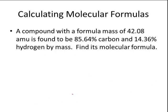Here's an example for calculating molecular formulas. A compound with a formula mass of 42.08 amu is found to be 85.64% carbon and 14.36% hydrogen by mass. Find its molecular formula. Remember, if given percent composition, we can change those percentages to grams — 85.64 grams of carbon and 14.36 grams of hydrogen — then convert each to moles by dividing by the molar mass.